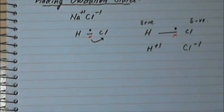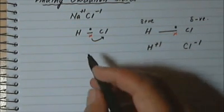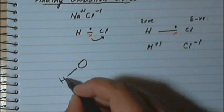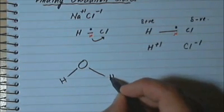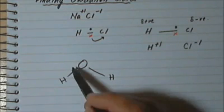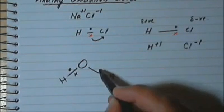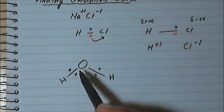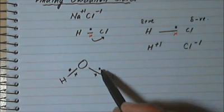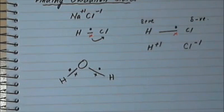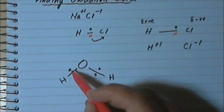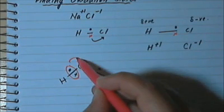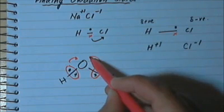We can find the oxidation states of other covalent compounds. For example, we have water. This is a water molecule — it has an oxygen atom bonded to two hydrogen atoms, and both are sharing electrons. Now oxygen is more electronegative, so both pairs of electrons will be residing much closer to oxygen.